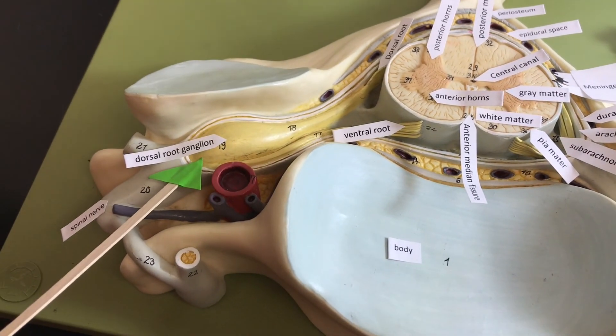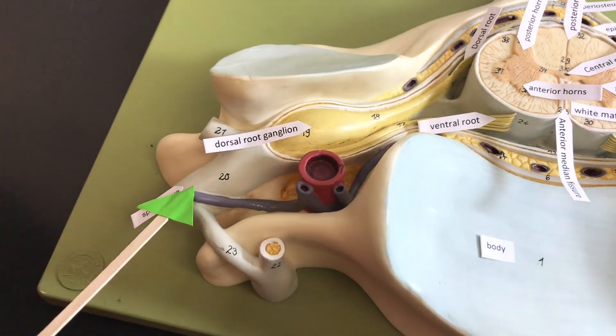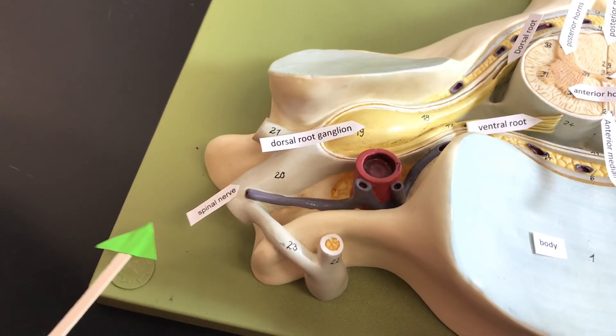And the axons are going to enter the mixed spinal nerve and then take the signal to an effector.